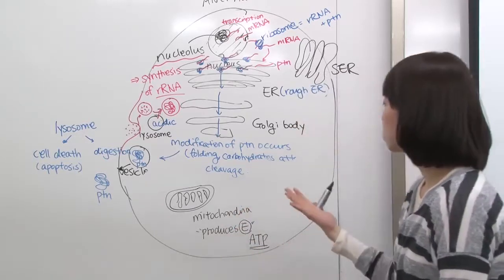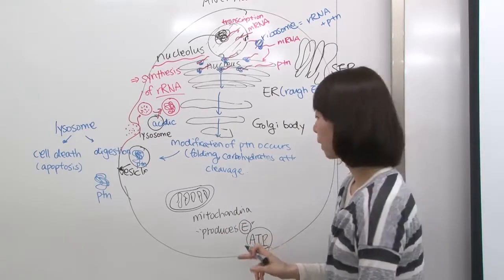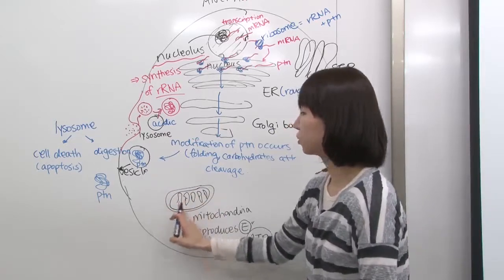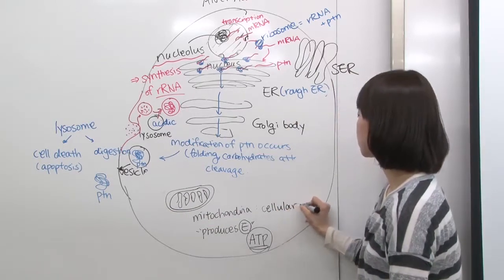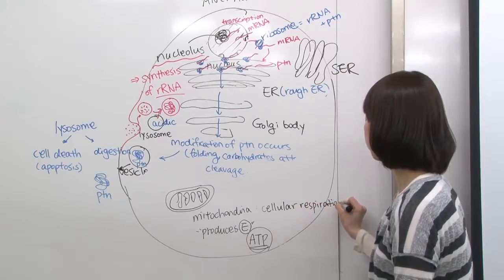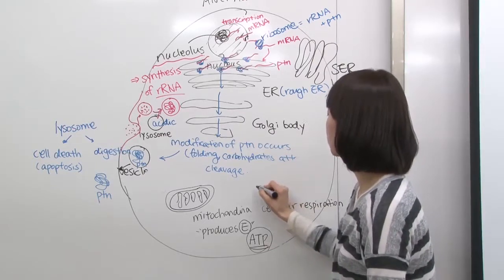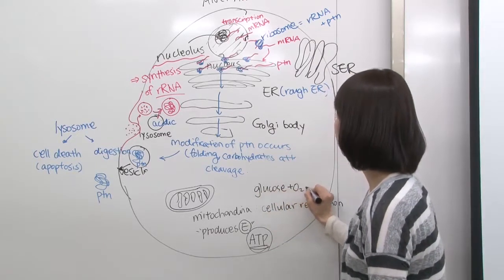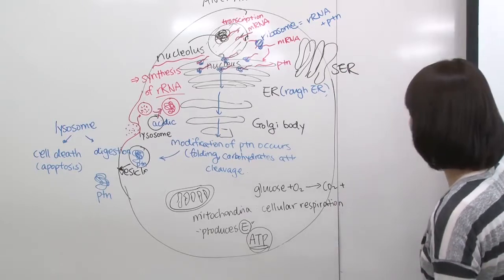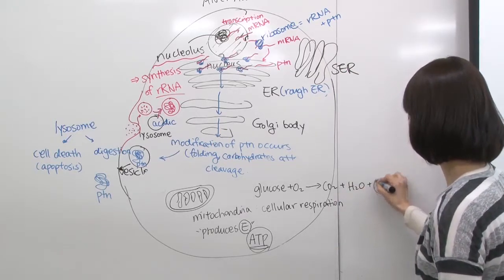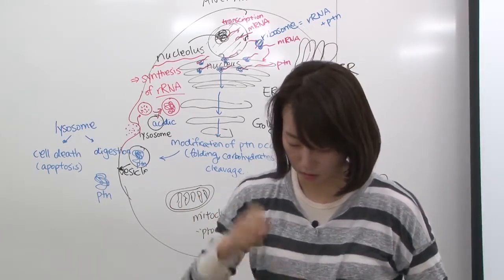ATP synthesis occurs within the mitochondria structure. Mitochondria participates in cellular respiration. The process of cellular respiration for human cells: glucose meets O2 to produce CO2, water, and energy. This kind of energy is formed here in the mitochondria.